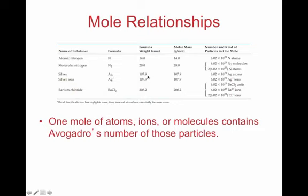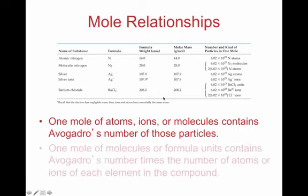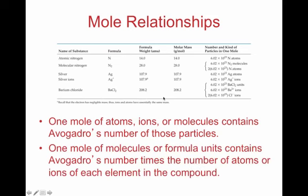Molar relationships: one mole of atoms, ions, or molecules contains Avogadro's number of those particles. For example, one mole of barium chloride, BaCl2, contains 6.02 times 10 to the 23rd formula units of BaCl2, and we can relate that to the mass using the molar mass from the periodic table.